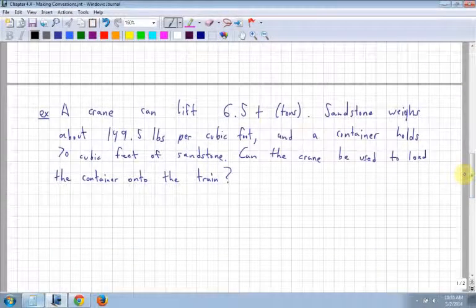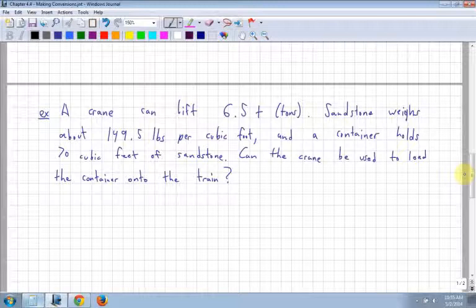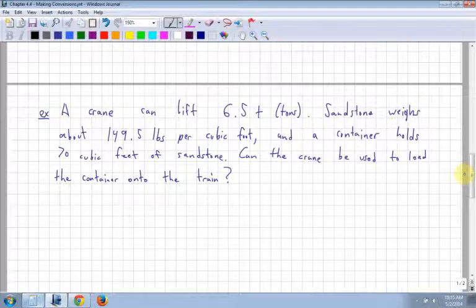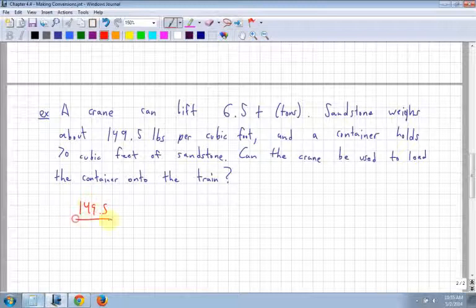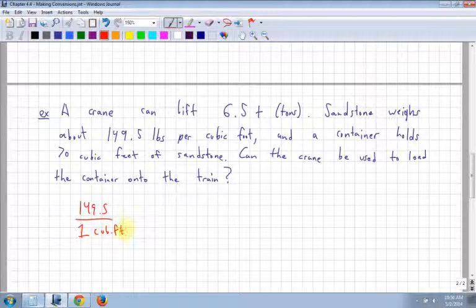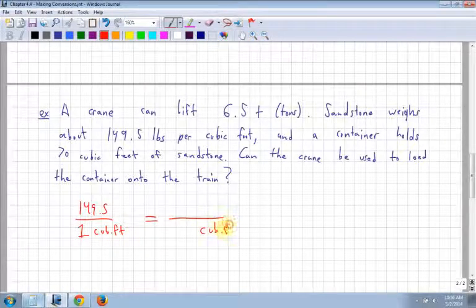All right. A crane can lift 6.5 tons. And again, we're going to assume that each ton is worth 1,000 kilograms. It says sandstone weighs about 149.5 pounds per cubic foot. And a container holds 70 cubic feet. So this is 149.5 per one cubic foot. It's always good to write down the information that you know. A container holds 70 cubic feet. So again, this is like our ratio. So the cubic feet go on the bottom. So I'm going to leave that on the bottom. And that's 70.